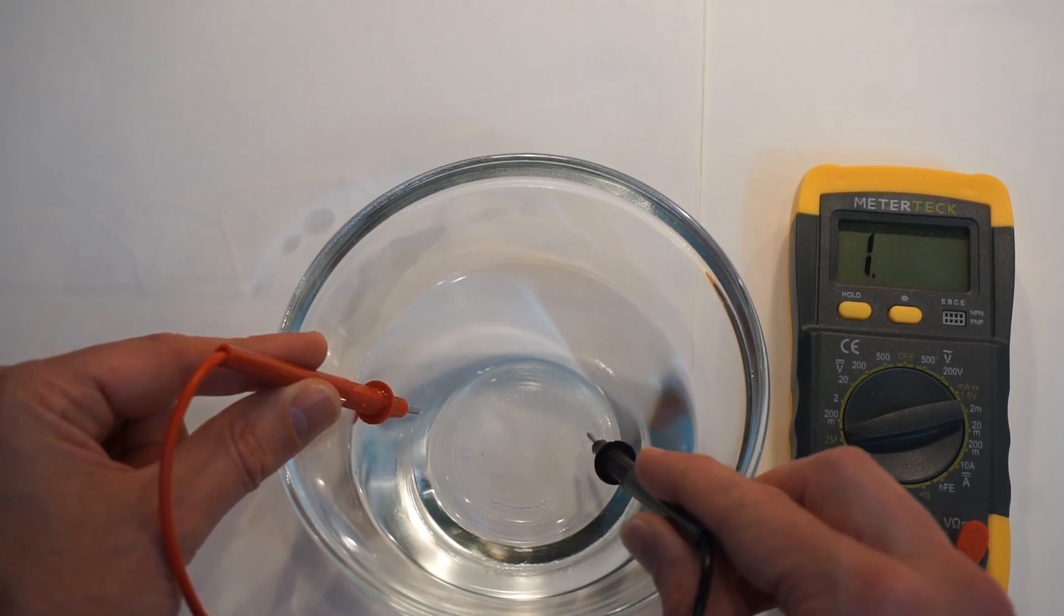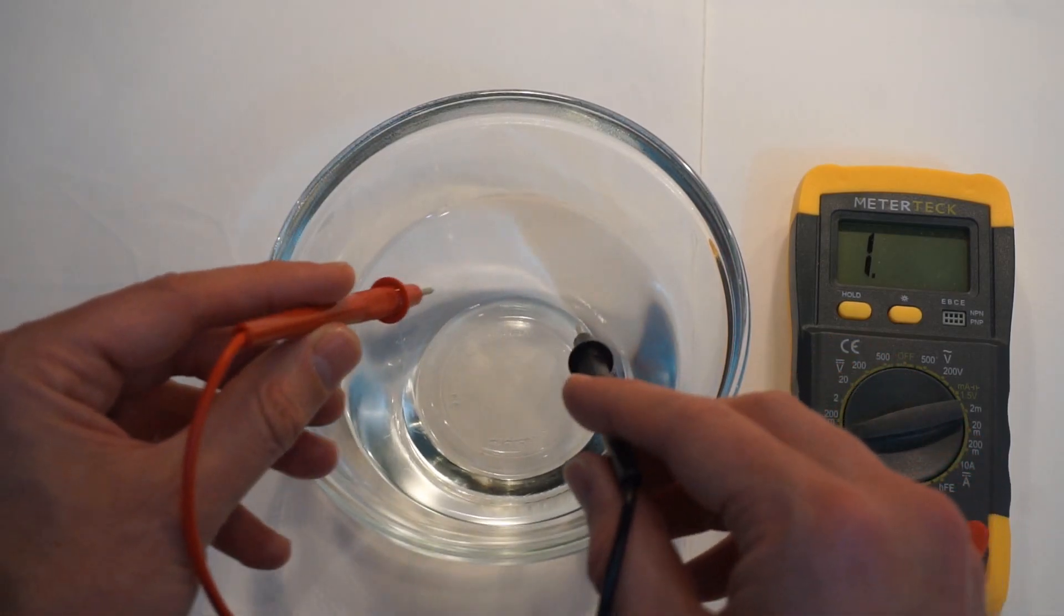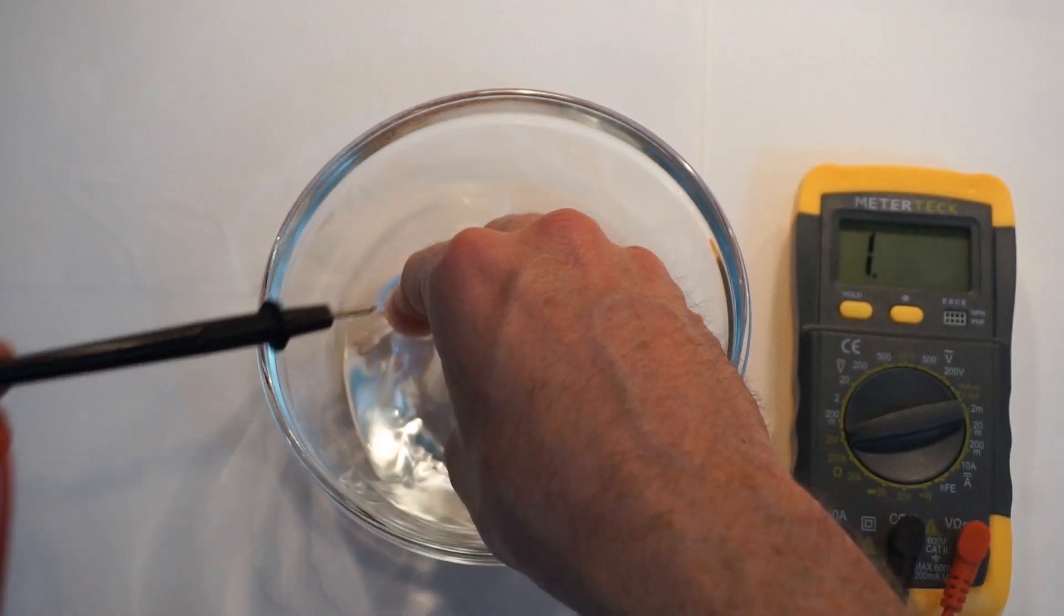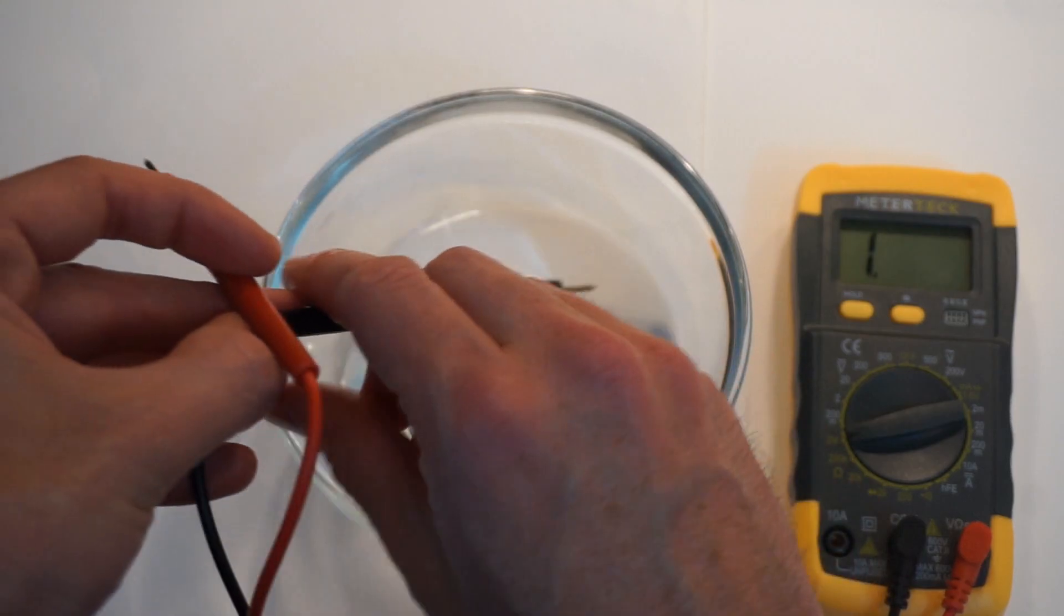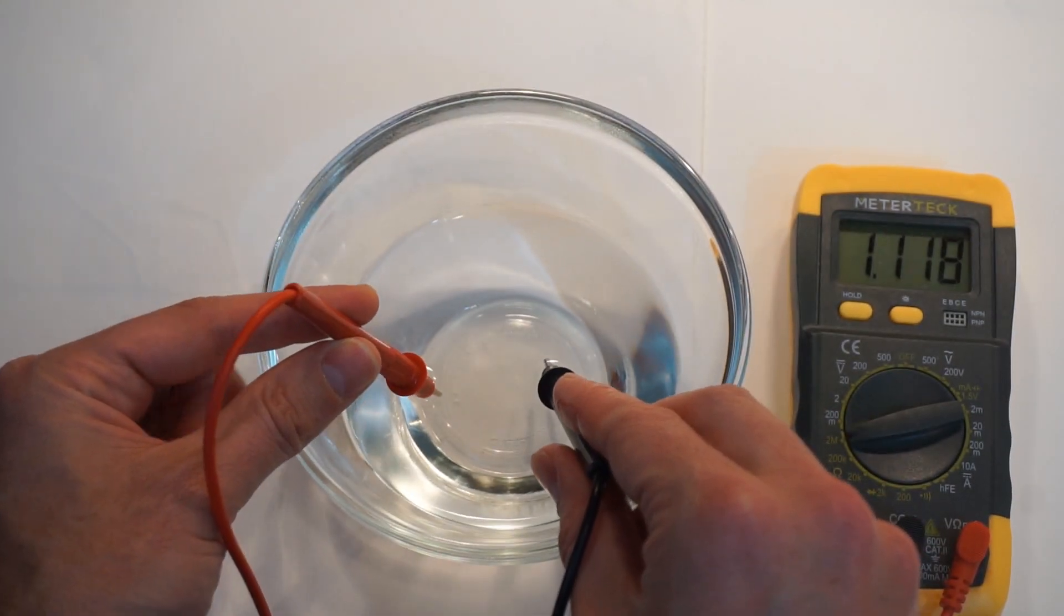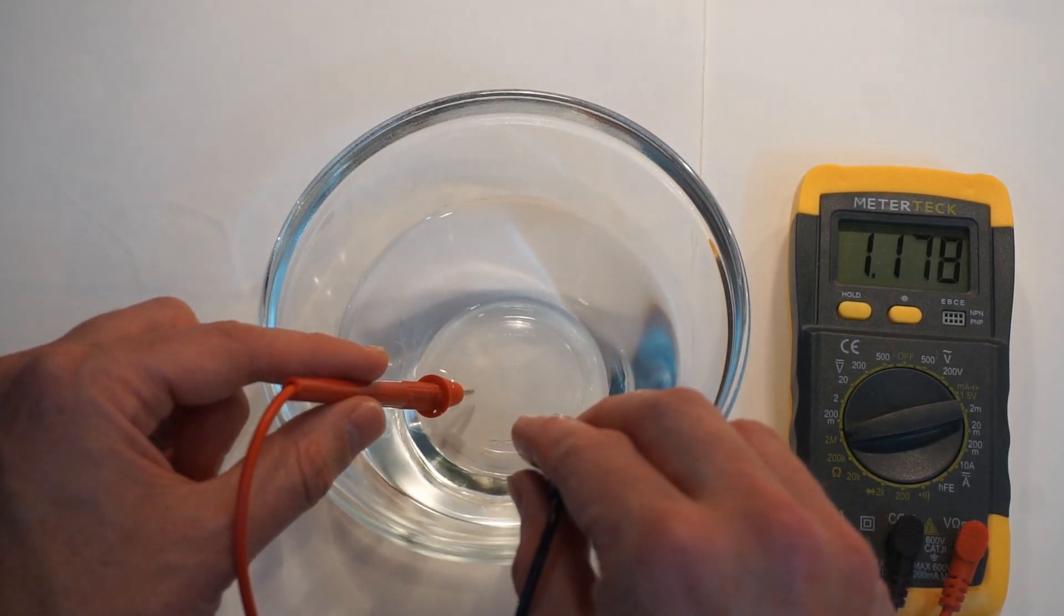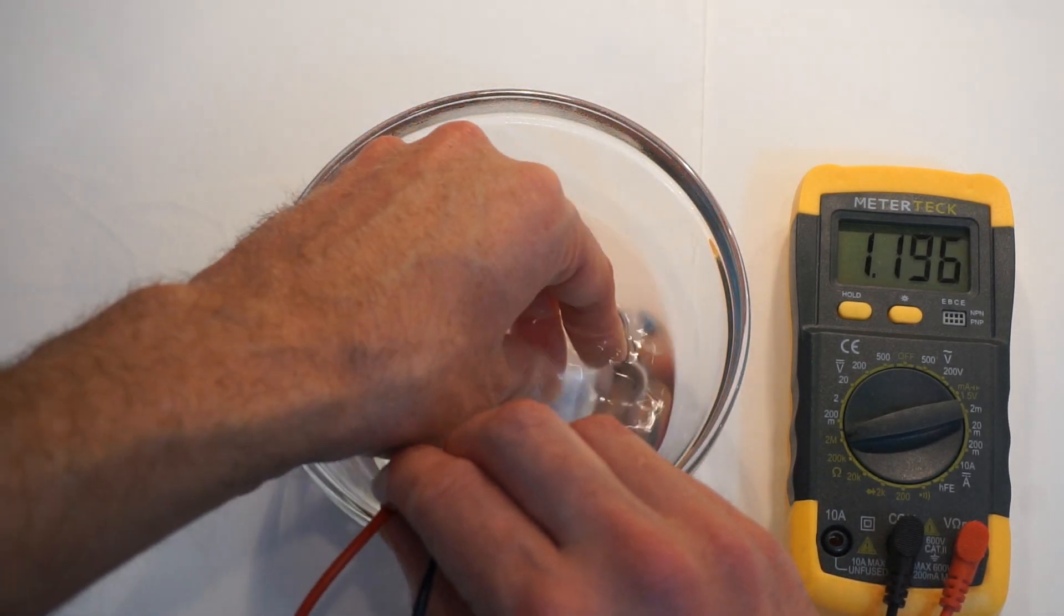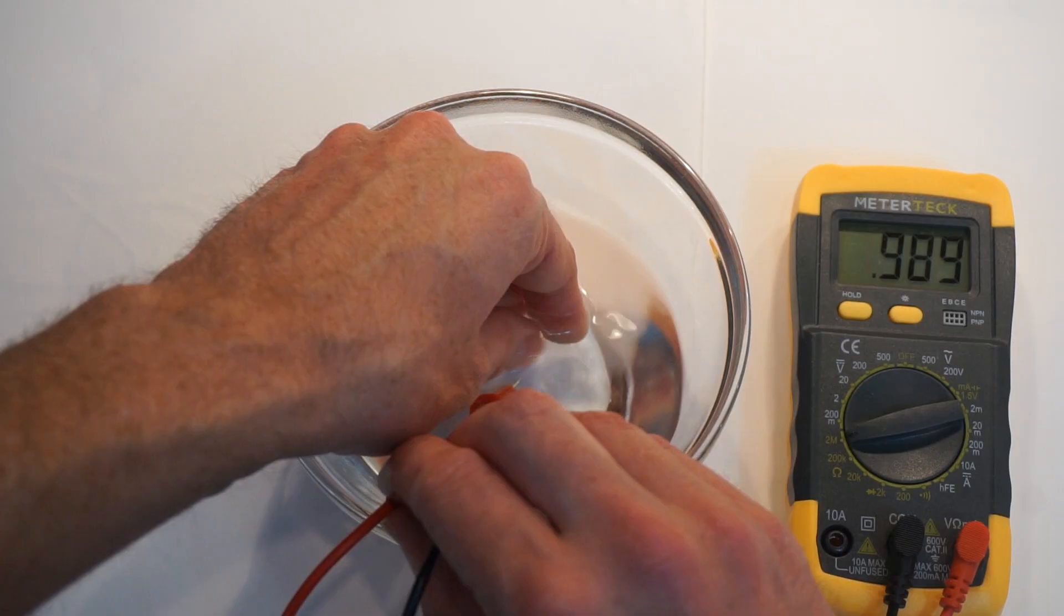But the problem with DI water is that stuff can dissolve into water. So for example, if I just stick my hands in this for a little bit, let's see if it changes the resistance. Wow, that made a big difference. Just by putting my hand in it, it dropped by around a megaohm. I leave it soaking in there - see how it just goes down.